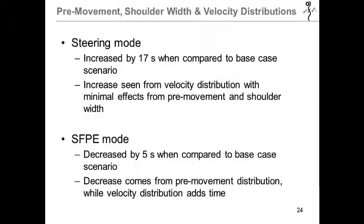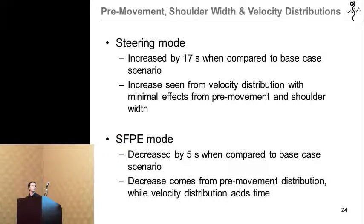So finally, the last scenarios were run with all of the distributions. And in steering mode it was seen to have an increase of 17 seconds when compared to the base case results. And this was driven by the velocity distribution as with collisions slower occupants were able to impede the flow. Pre-movement ended up having negligible effects because of intermediate queuing and shoulder width the bigger and smaller occupants were really able to cancel each other out. In SFPE mode there was seen to be a decrease by 5 seconds when compared to the base case scenario. And this was driven by the pre-movement distribution as it was seen that shoulder width had no impact and that the velocity distribution actually ended up adding time to the final result.